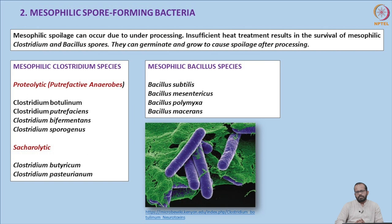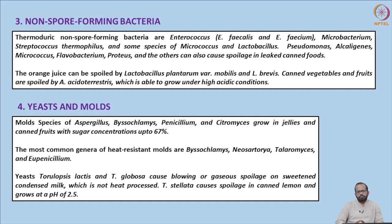Non-spore-forming bacteria in canned food include thermoduric organisms such as Enterococcus faecalis, Enterococcus faecium, Microbacterium, Streptococcus thermophilus, Micrococcus, and Lactobacillus. Pseudomonas, Flavobacterium, and Proteus can cause spoilage in leaked cans. Lactobacillus plantarum can spoil orange juice, and various bacteria can spoil canned vegetables and fruits under high acid conditions. Presence of non-spore-forming bacteria indicates leakage or post-process contamination.